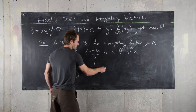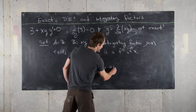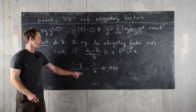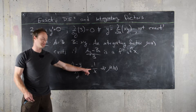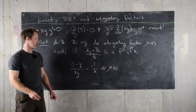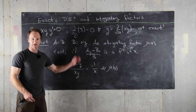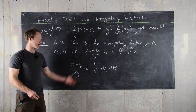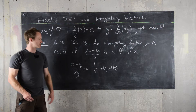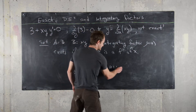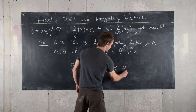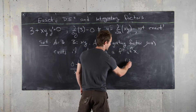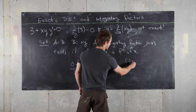Furthermore, we know that the integrating factor μ(x) will be the exponential of the antiderivative of this. I have another video where we derive this fact, but we'll just use it here. So we have the exponential of the antiderivative of negative 1 over x dx.